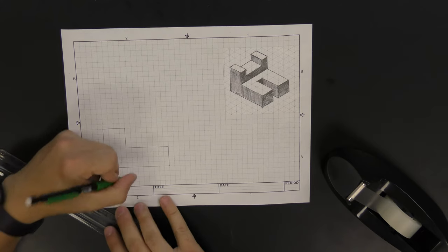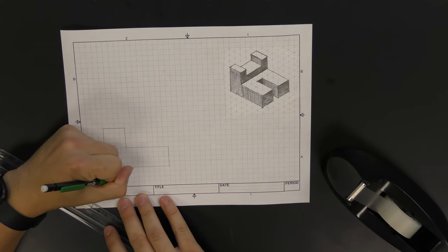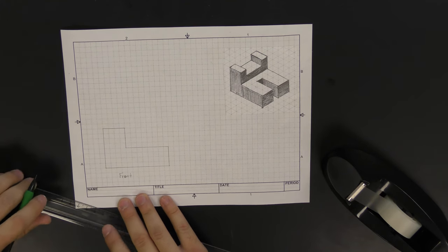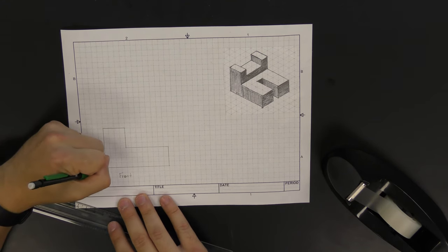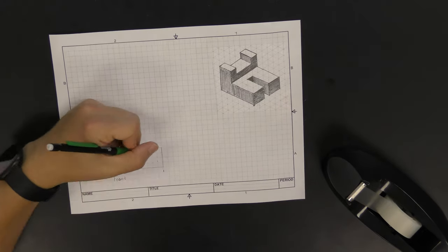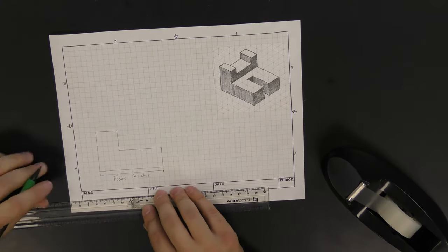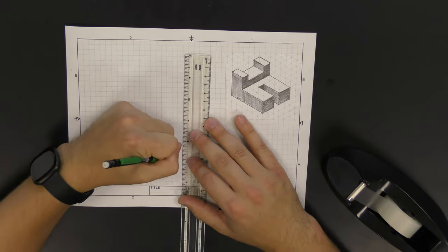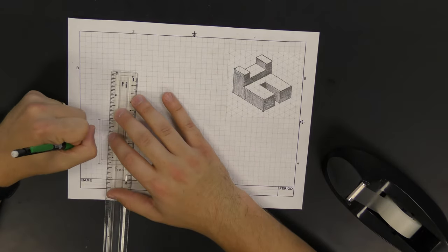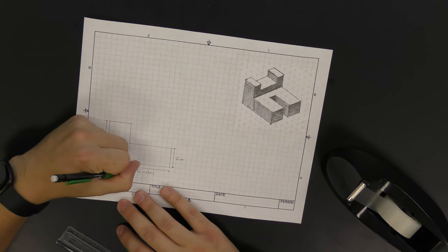Notice that the front view that we've created here is exactly the same as the front view that we started with in the last video. After we finished creating our front view sketch, we're going to write front under the sketch, and we're also going to add our dimensions. There are specific rules about where dimensions go and what they should look like. We'll focus on those specific rules in another video.